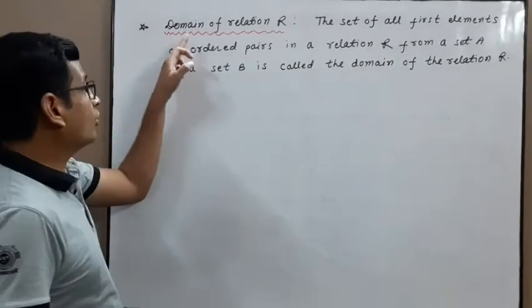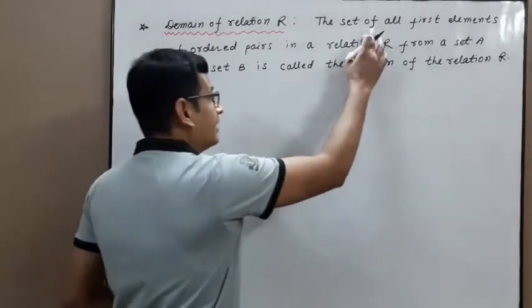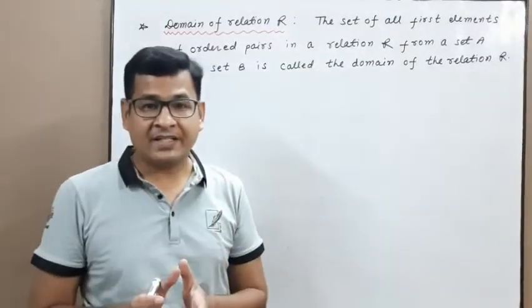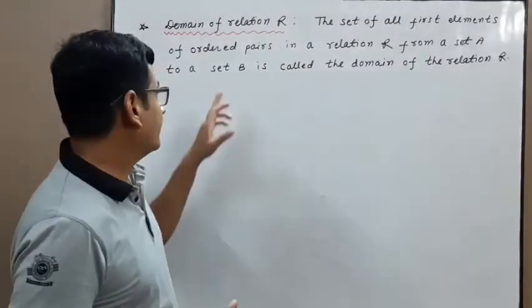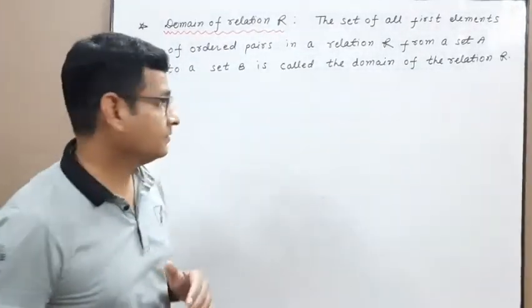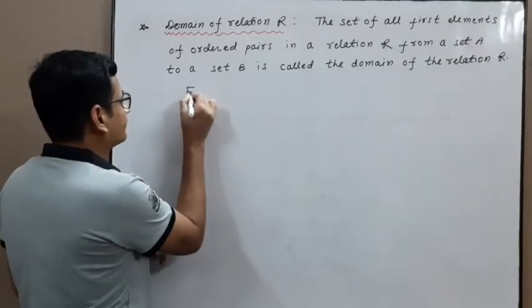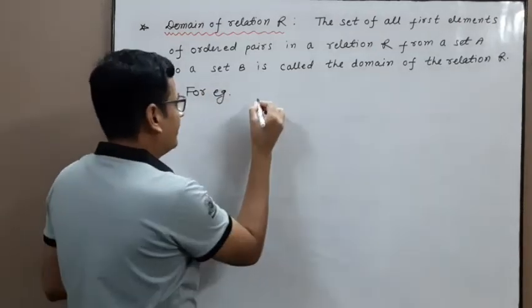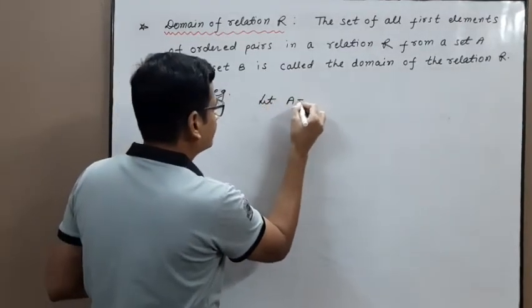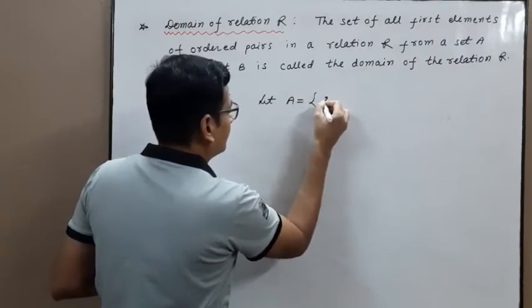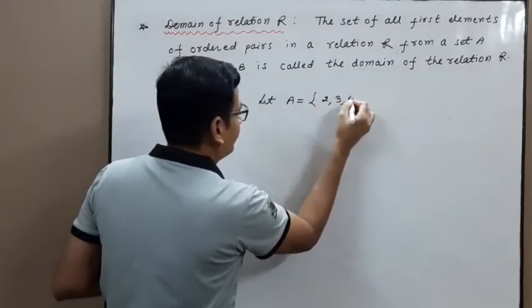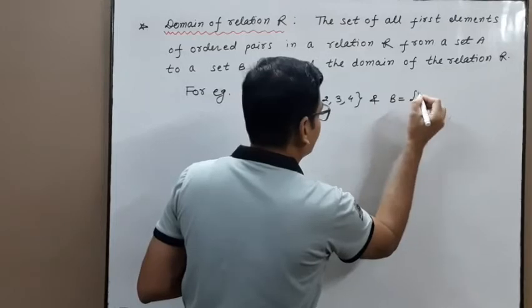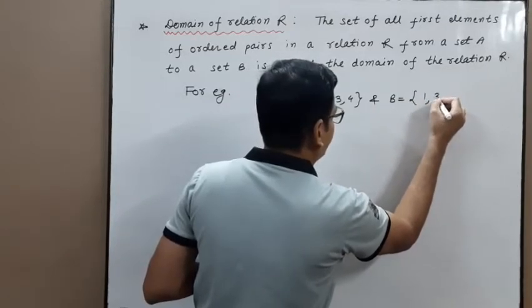Next point: domain of relation R. The set of all first elements of ordered pairs in a relation R from a set A to a set B is called the domain of the relation R. For example, let A equal to {2, 3, 4} and B equal to {1, 3, 6}.